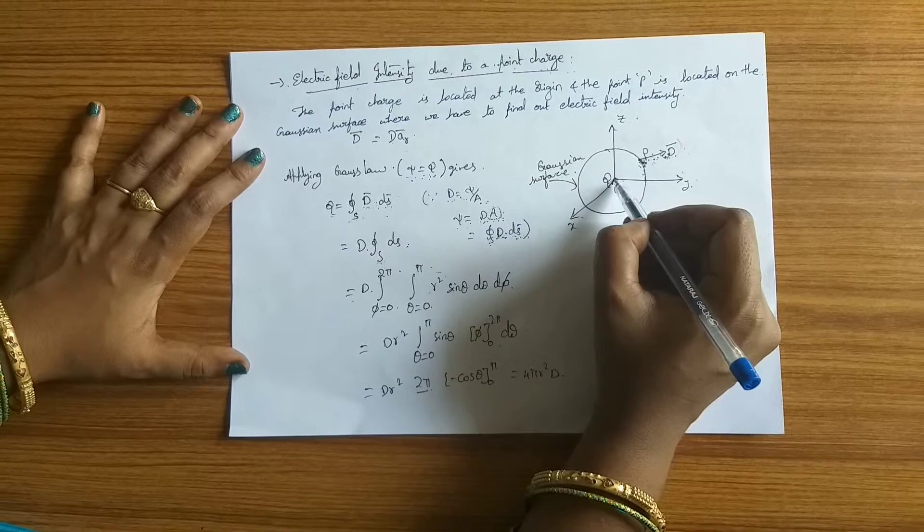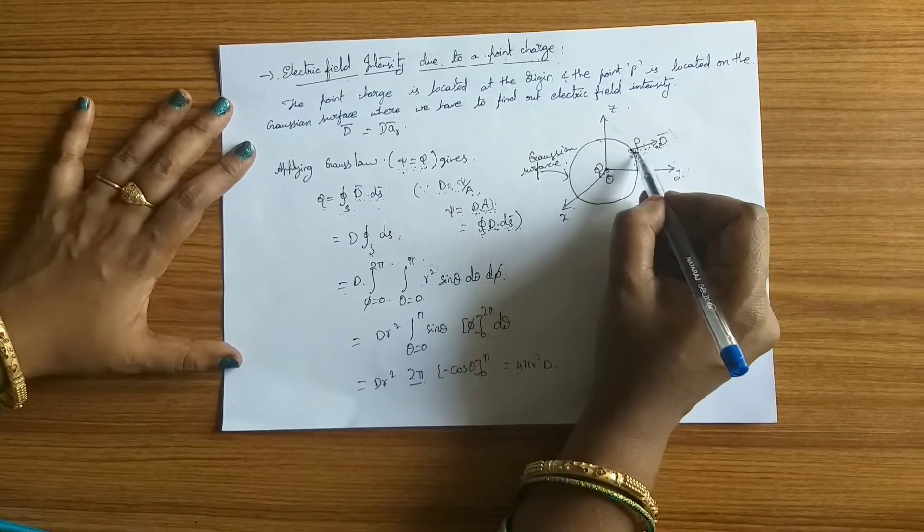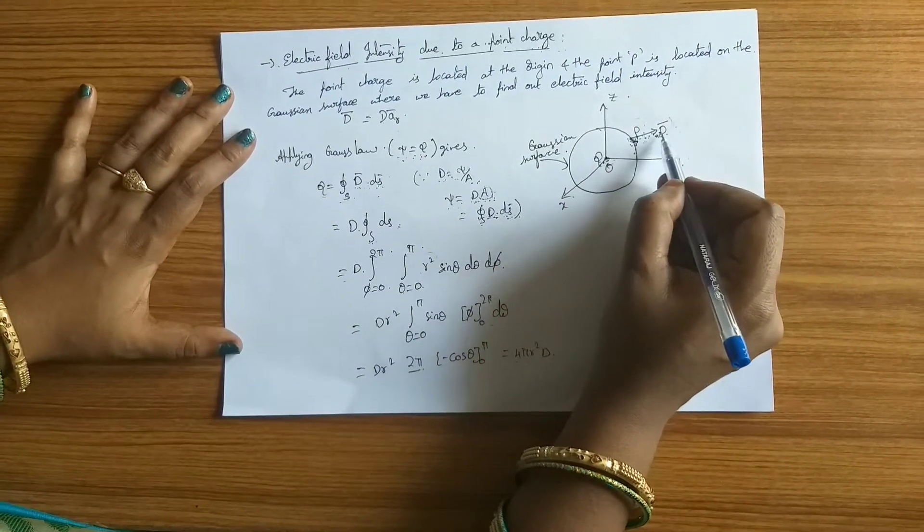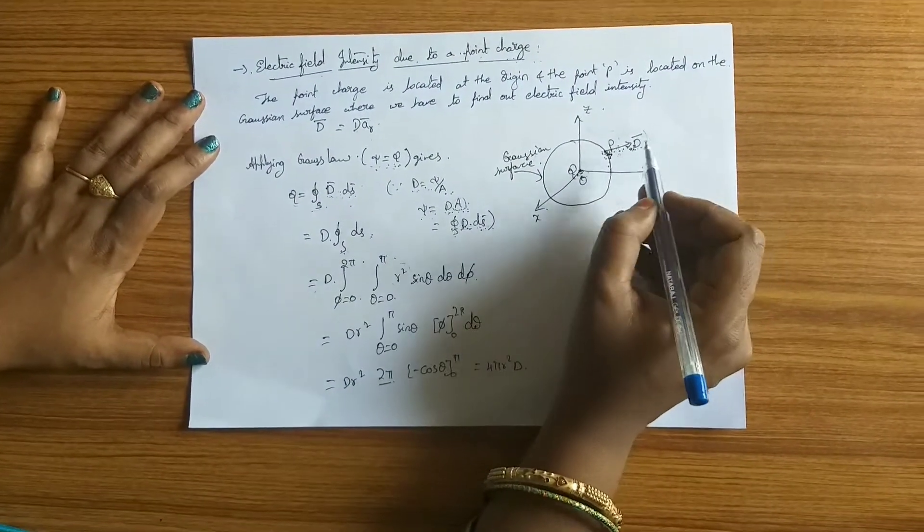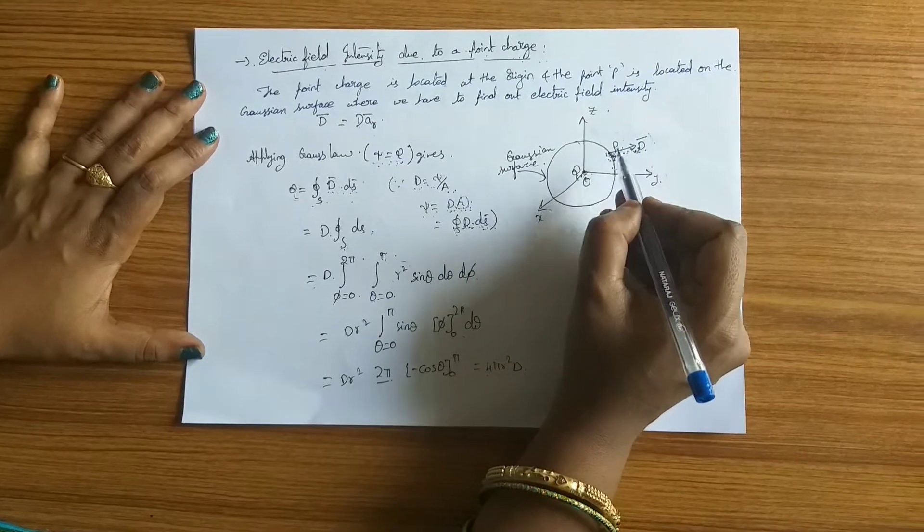Now because of this charge we have to find out the electric field intensity at point P with the help of electric flux density D bar which is normal to the closed surface, nothing but the Gaussian surface. The Gauss law can be applied only to the Gaussian surface.